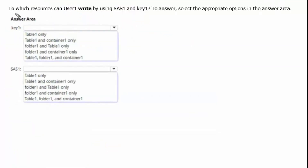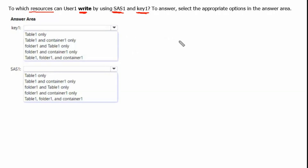The question asks: to which resources can user1 write using sas1 and key1? These represent the two access methods — the SAS1 exhibit settings and the roles assigned to user1 on storage1. Let's understand the question using a diagram before reviewing the answer area.